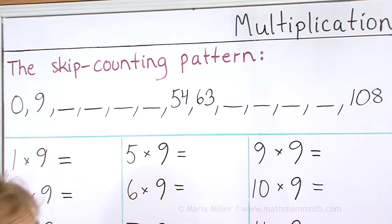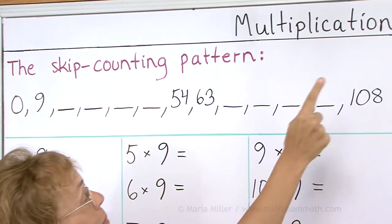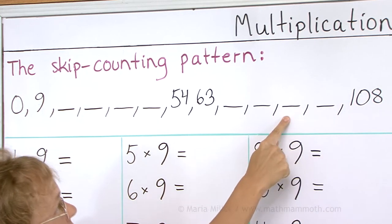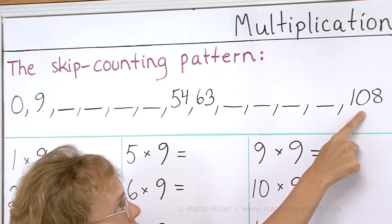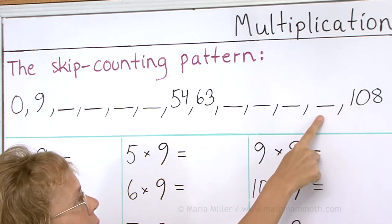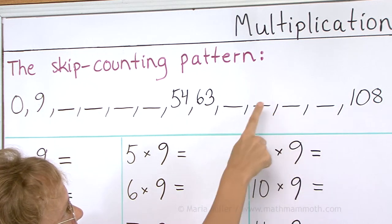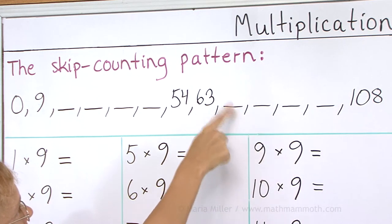And then backwards. 108, 99, 90, 81, 72, 63. Your turn. 108, 63.